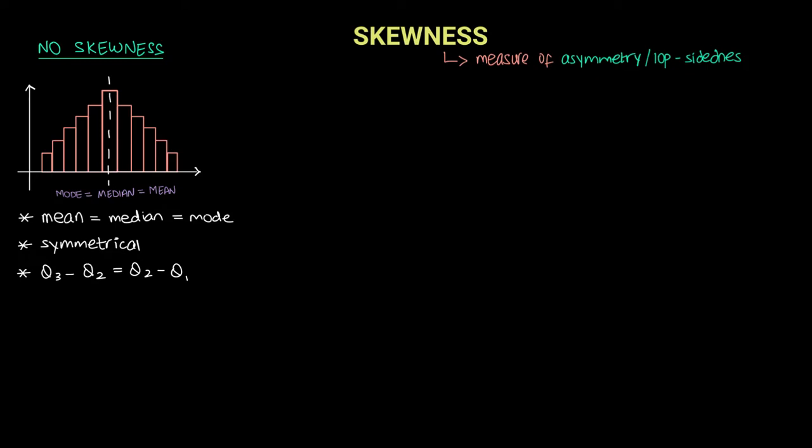Now let's say we did not have the graph. How do we find out, using just the data, that this data is a symmetrical distribution? Well, we can calculate the mean, median, and mode. If the three values are the same, then the data distribution is symmetrical.